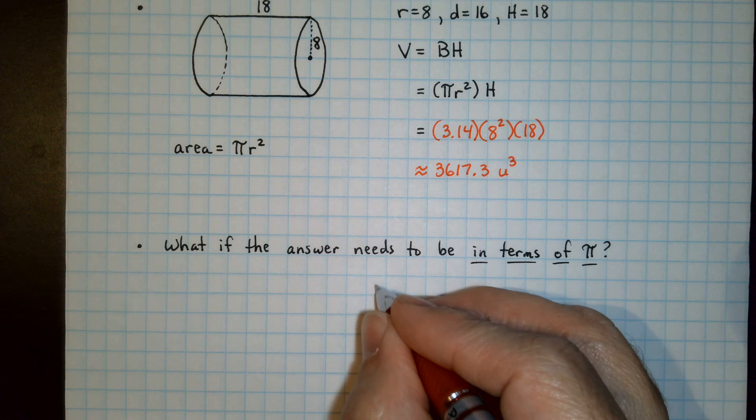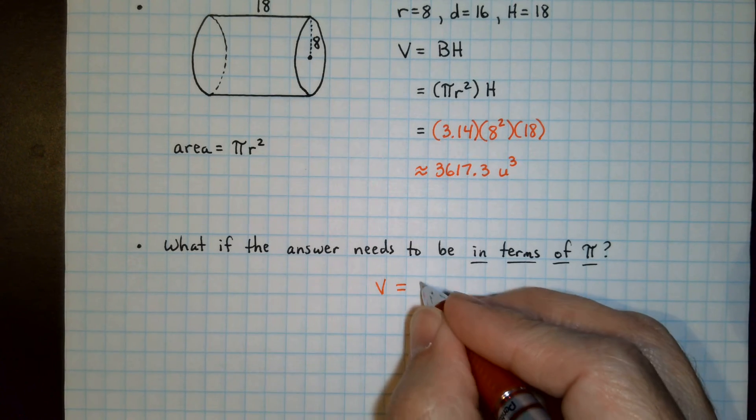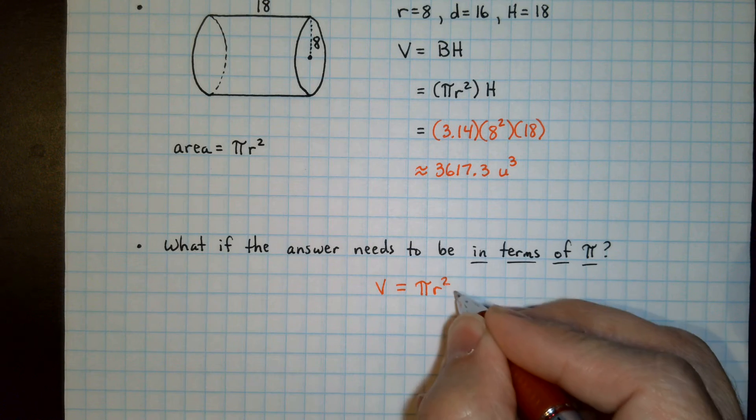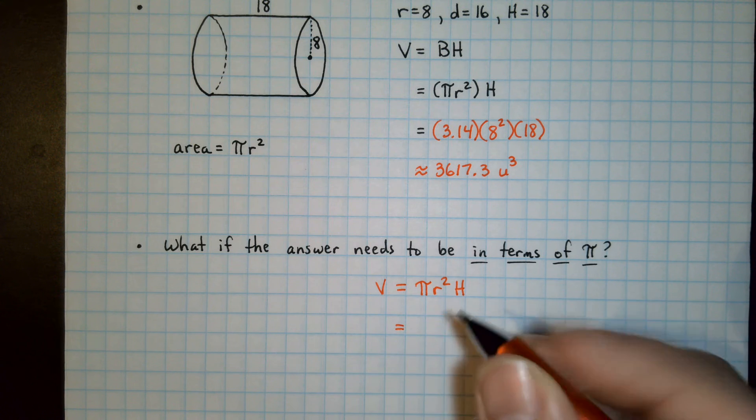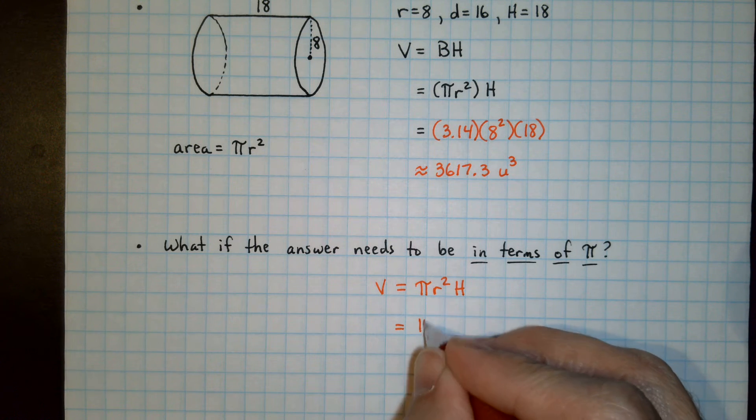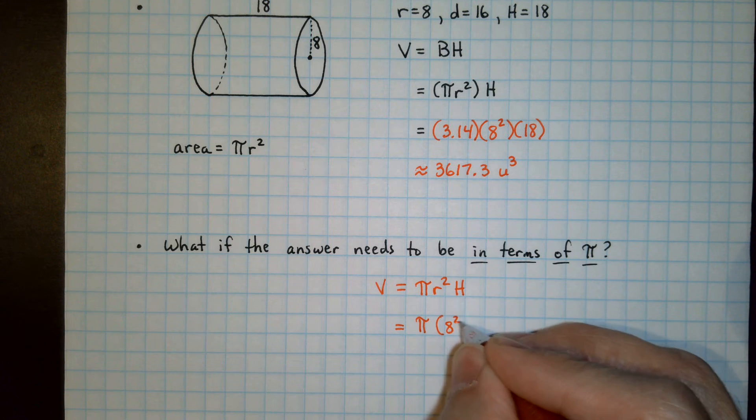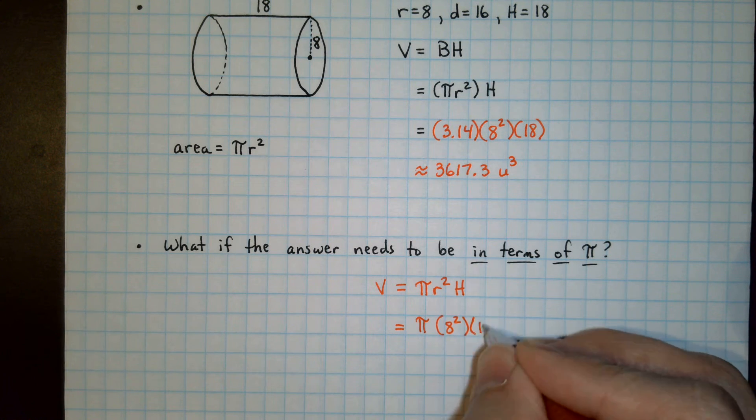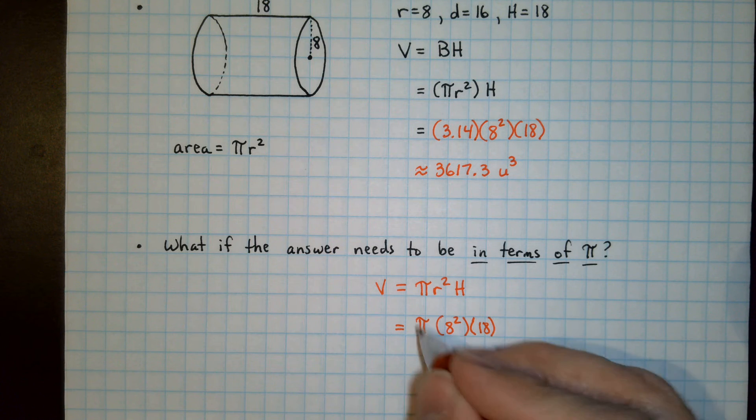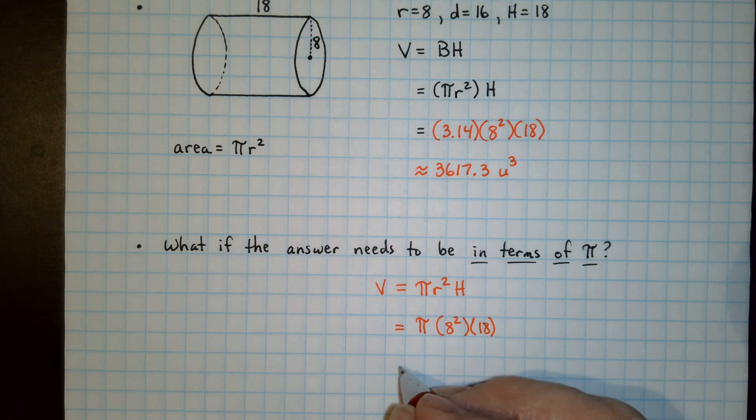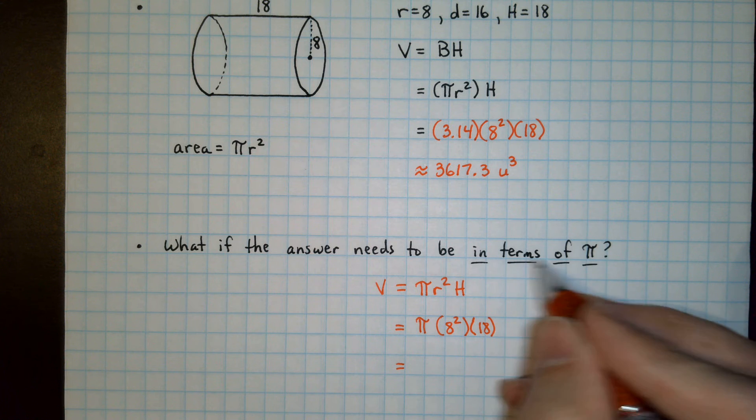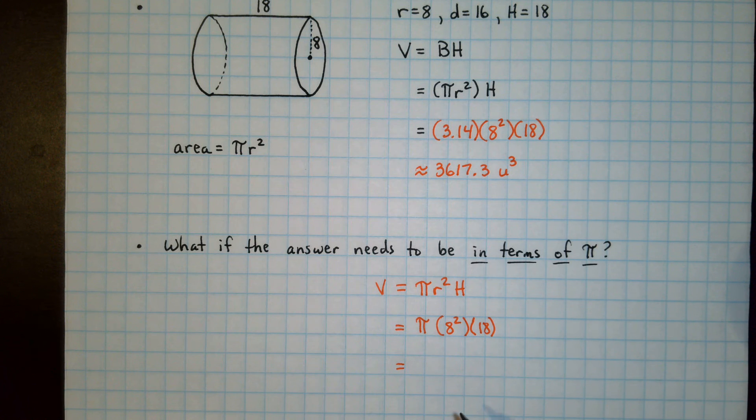So at the point of the problem where we had pi r squared h, and we started to substitute values, we would leave the pi symbol there. 8 squared would be there, 18 would be there, but we didn't put 3.14 anywhere. That's the idea. We're not putting that 3.14 in. We're leaving the pi symbol there to represent it.